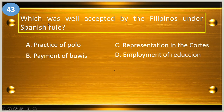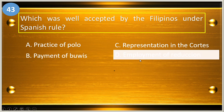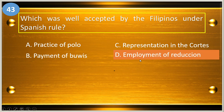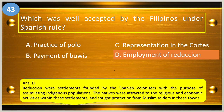Number forty-three: which was well accepted by the Filipinos under Spanish rule? A, practice of polo; B, payment of buis; C, representation in the cortes; and D, employment of the reduction. The answer is employment of reduction.